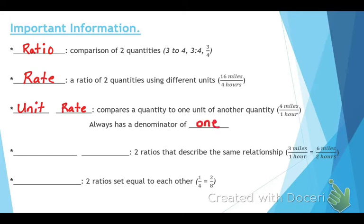The next term describes two ratios that describe the same relationship. For example, three miles per hour is the same thing as six miles for two hours. These are called equivalent rates.